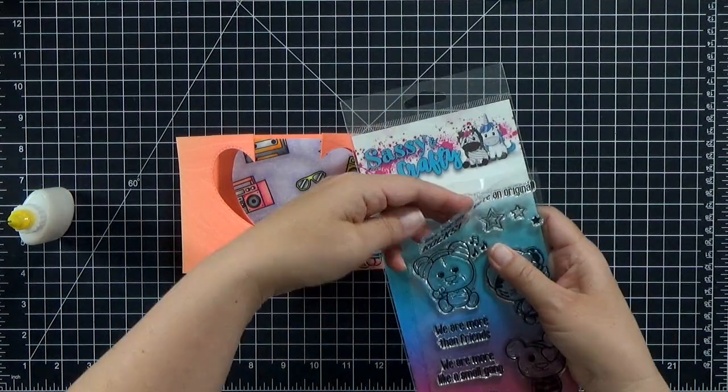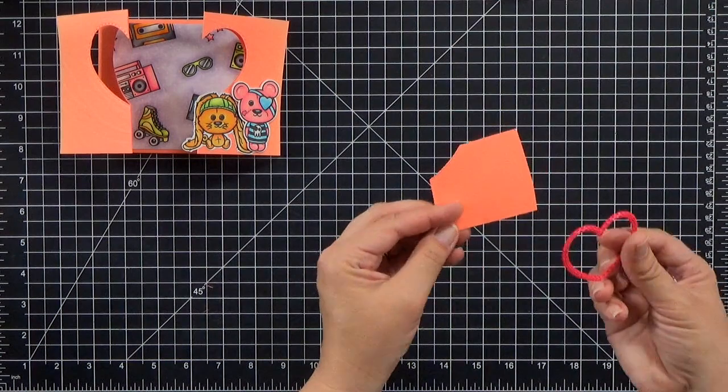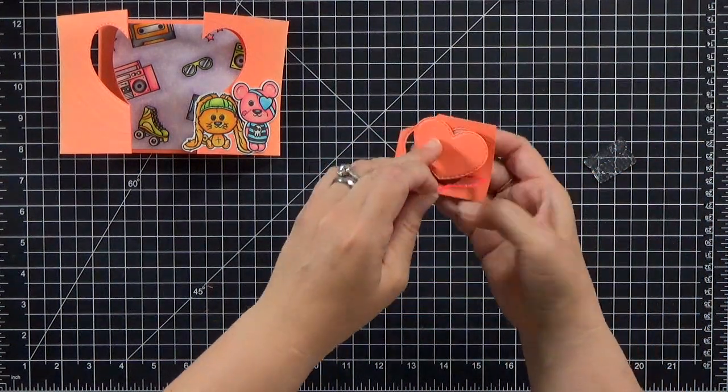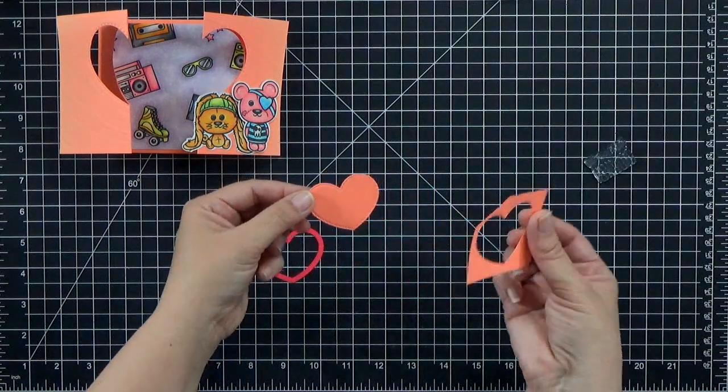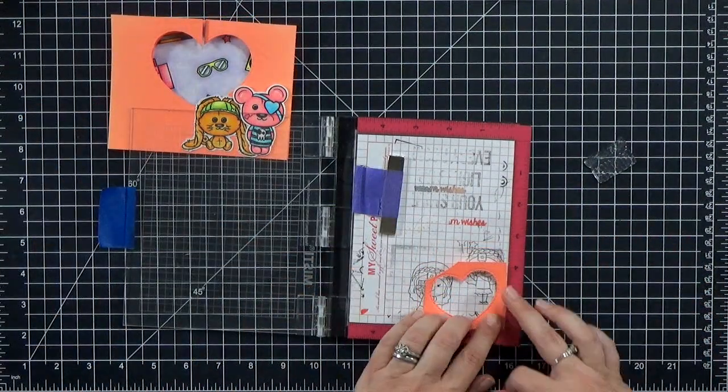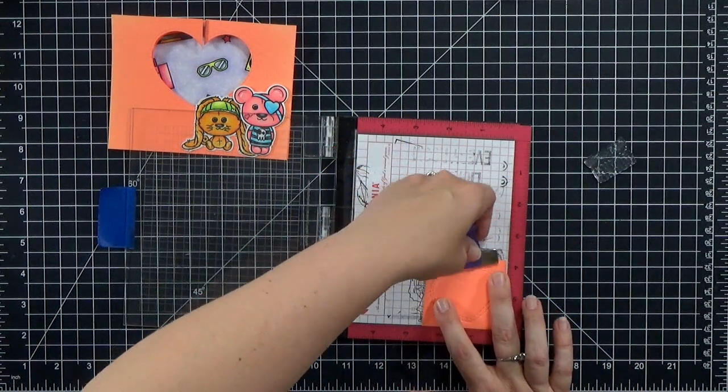And then now it's time for our sentiment. So I grab the next smaller heart and I grab the sentiment that says I think it says hope your day rocks. And I want to emboss that. So I'm going to die cut the smaller heart from another scrap of that orange paper and I'm saving both the negative and the positive there.